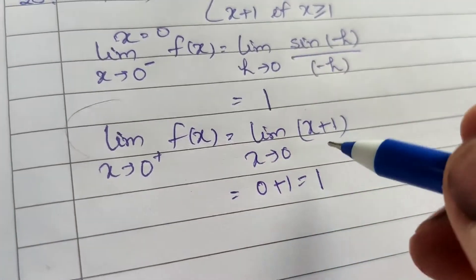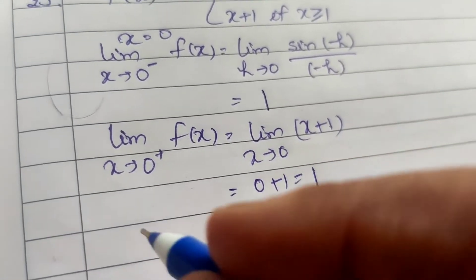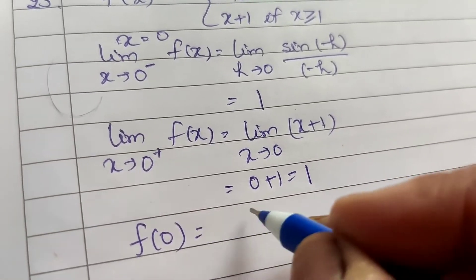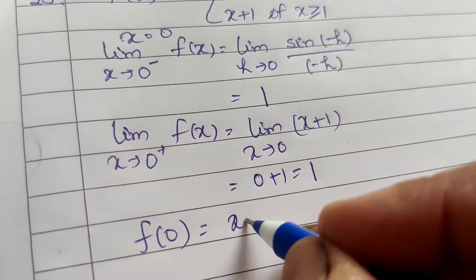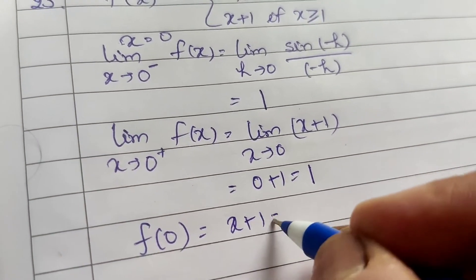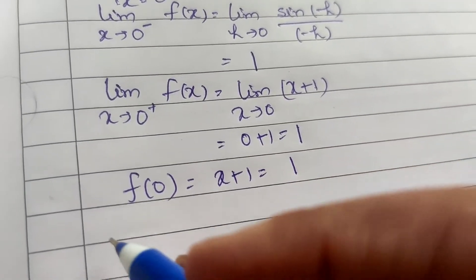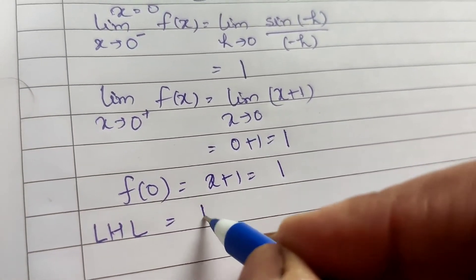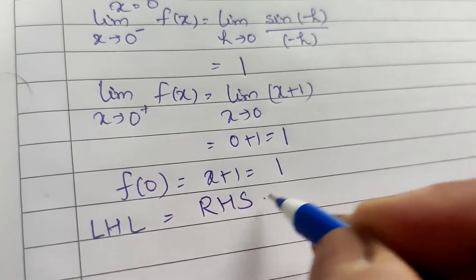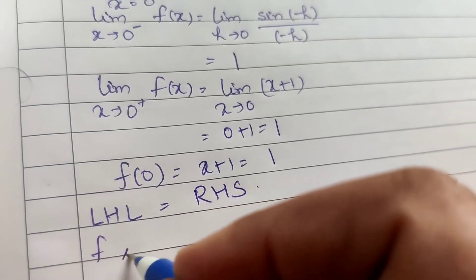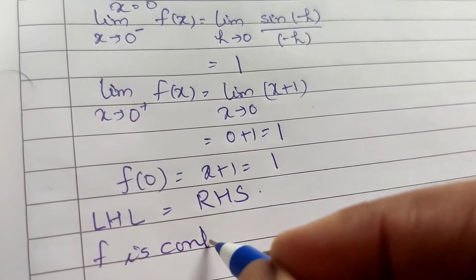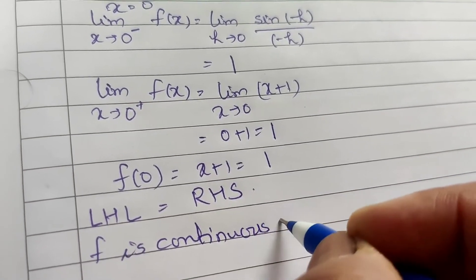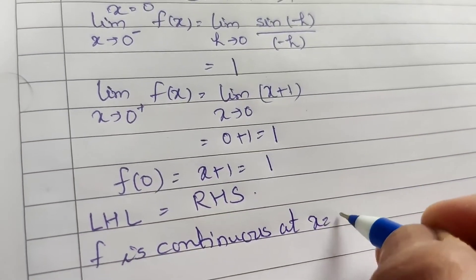The left hand limit and right hand limit are both equal to 1. Now check the function value at x equal to 0: f(0) = x plus 1 = 1. Since left hand limit equals right hand limit equals the function value, the function is continuous at x equal to 0.